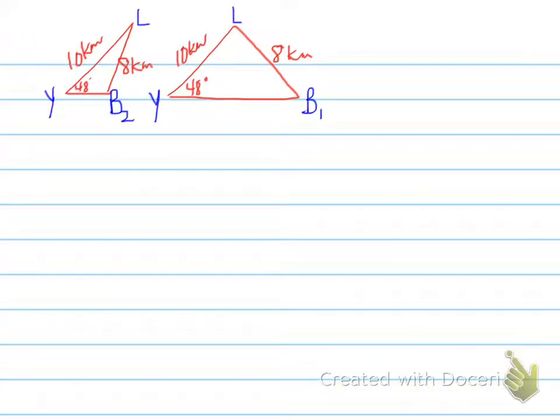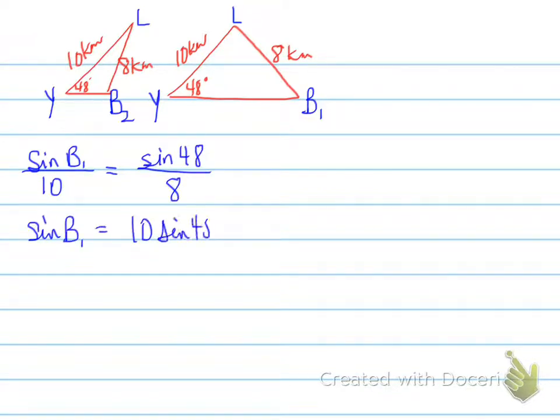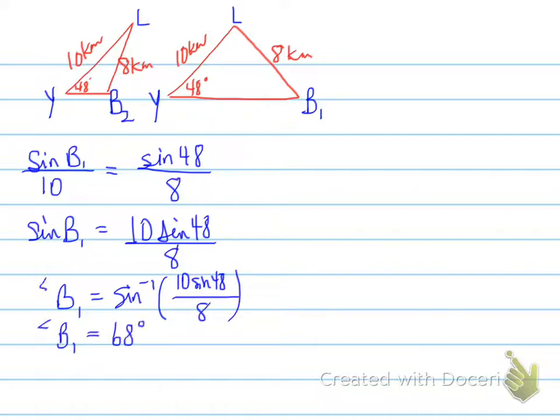There's your 48 degrees. And now what you have to do is determine the value of YB1 and YB2. Those are the two values. You do that by having to do some work. What it requires you to do is to think past grade 10 to be the answer to these questions. Sine 48 over 8 is equal to sine B1 over 10. The value here is 8 sine B1 is equal to 10 sine 48. Move that 8 over, and you get 10 sine 48 over 8. You need to find the value of B1. You find out that the B1 value is going to be 68 degrees.